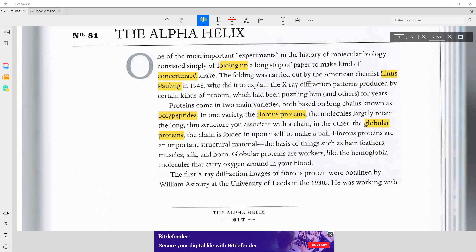The first x-ray diffraction images of fibrous protein were obtained by William Asprey at the University of Leeds in the 1930s.